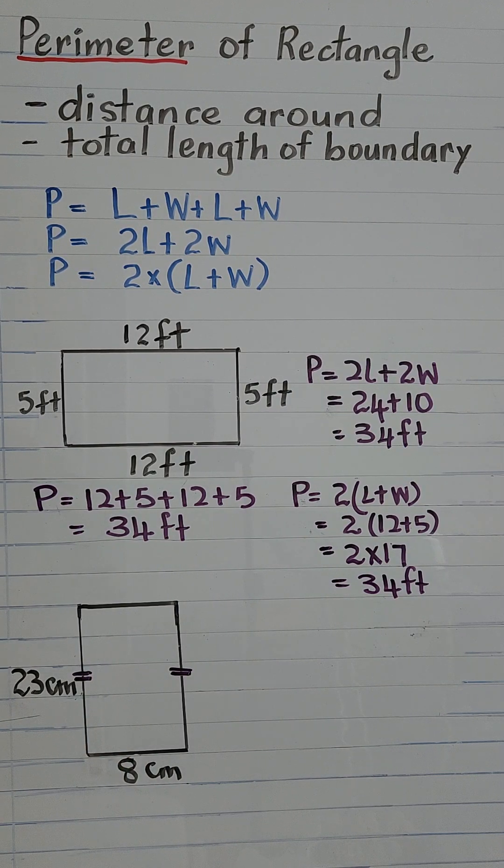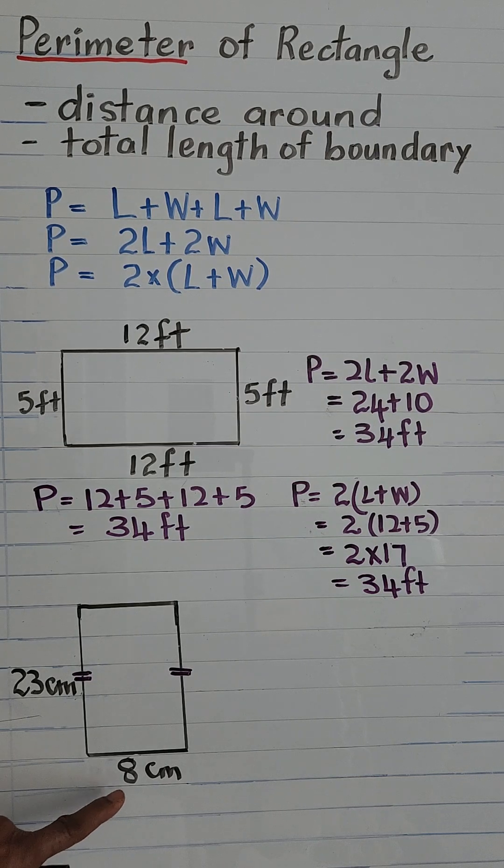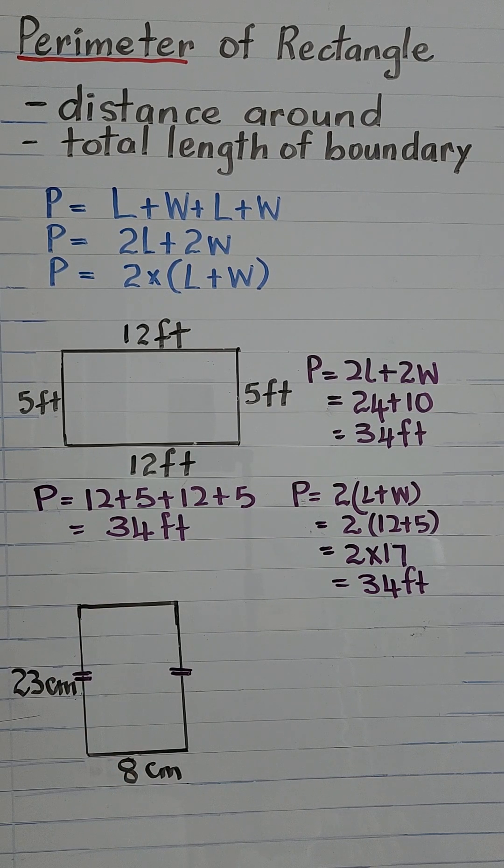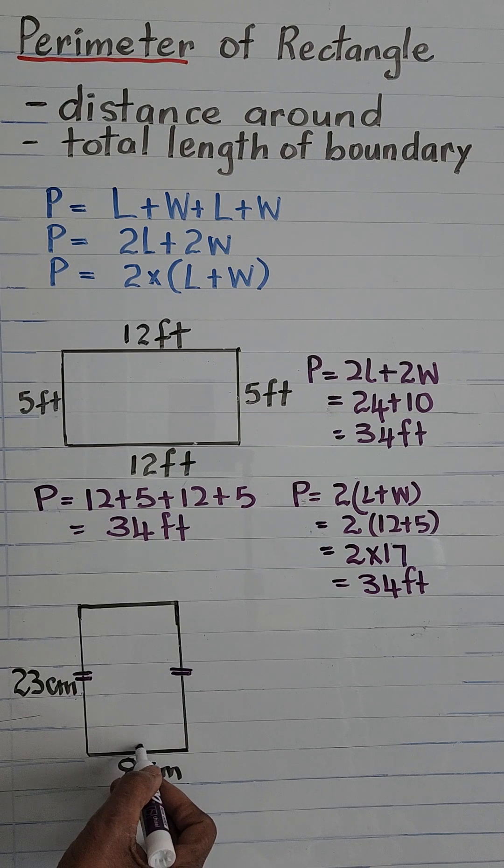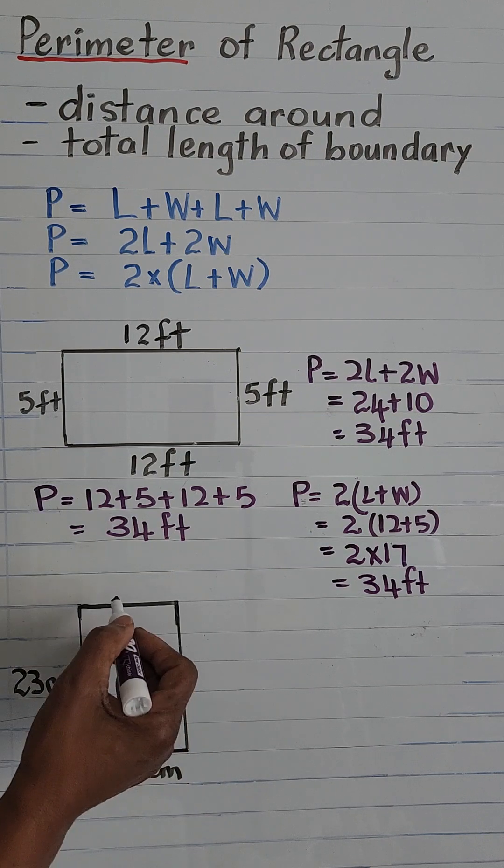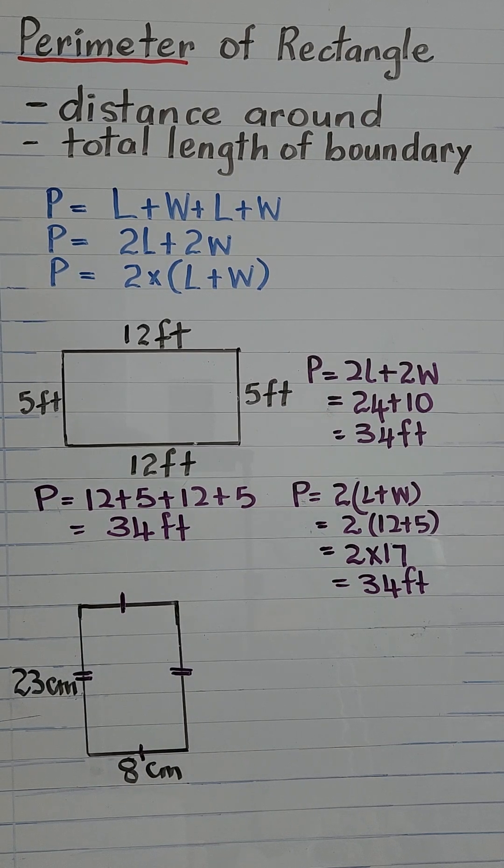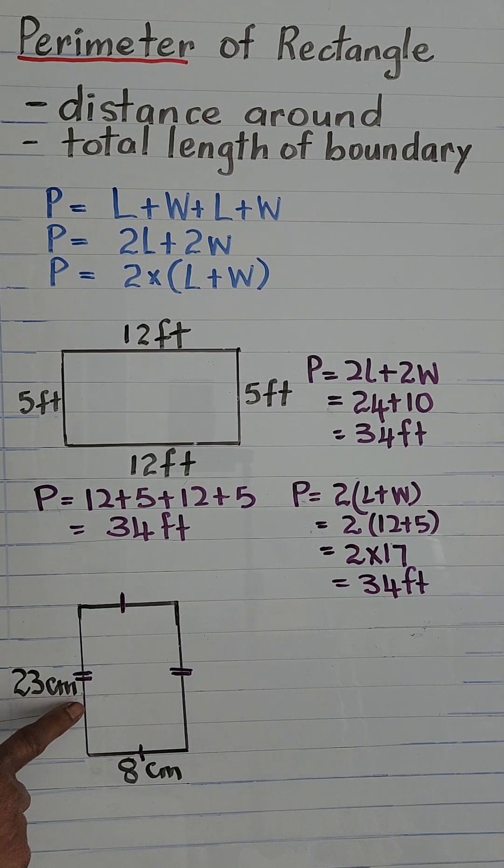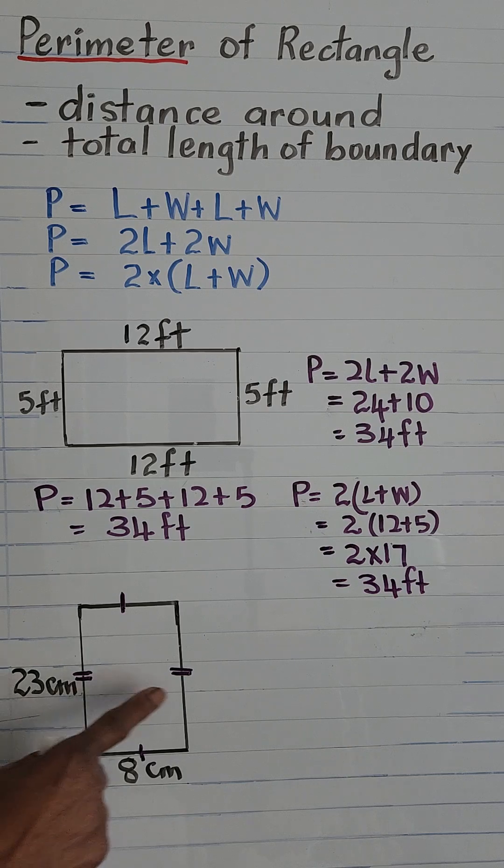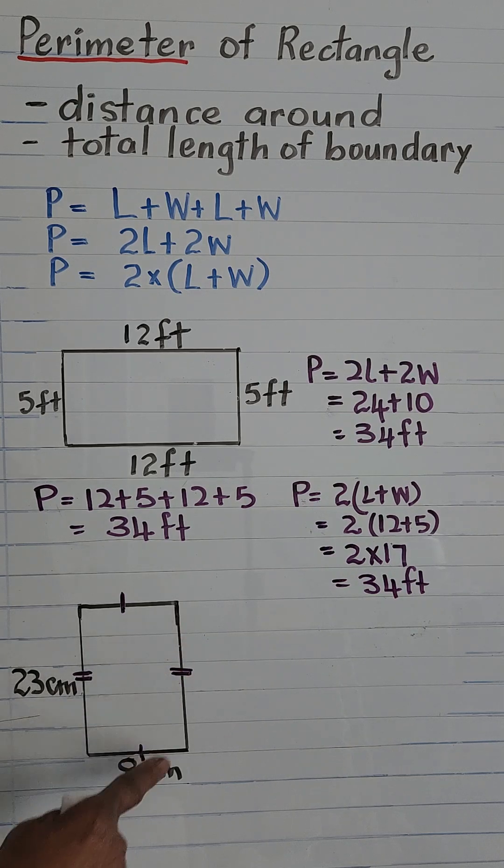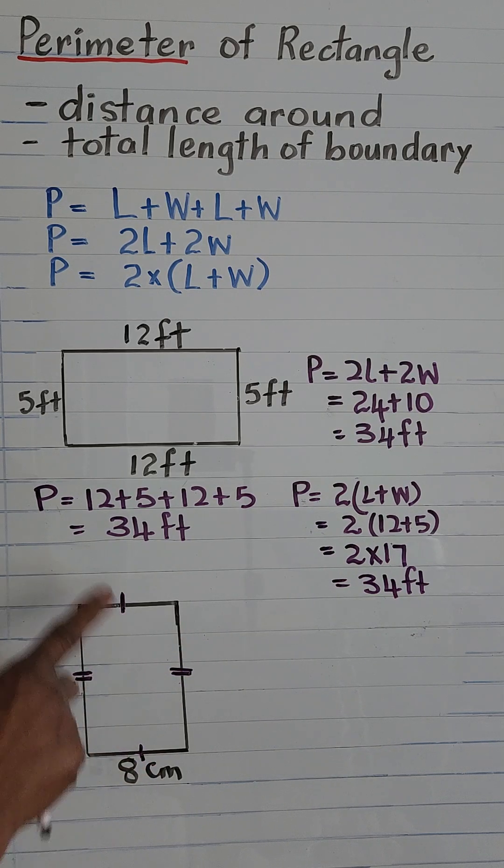And then the opposite side of 8, which is this side, is also equal to 8. So we'll give that a mark and also give this a mark. So that signifies that this side is opposite to this side and they are equal. The same mark means they are equal.